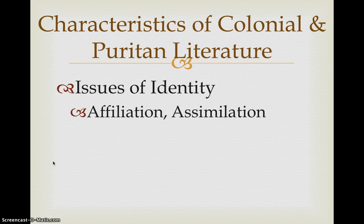We also see issues of identity. Again, they're conquering — they're going to create their own identity. What are they saying about that in the very early literature, those first 250 pieces? What do we see about the identity that they're creating right away?